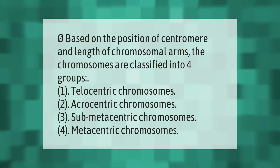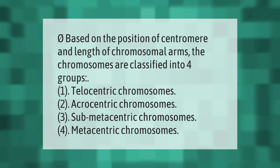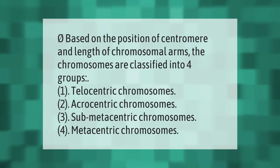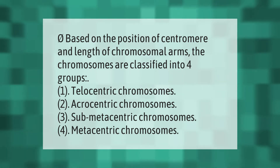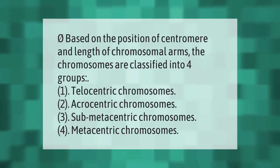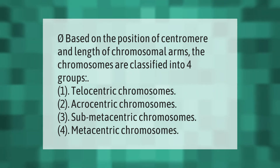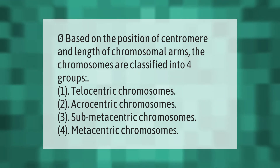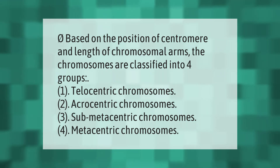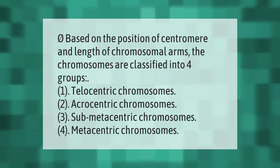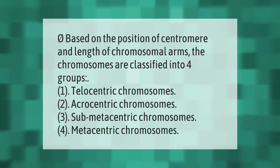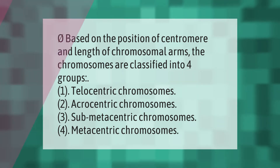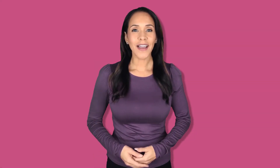Based on the position of the centromere and length of chromosomal arms, chromosomes are classified into four groups: (1) telocentric chromosomes, (2) acrocentric chromosomes, (3) submetacentric chromosomes, and (4) metacentric chromosomes.